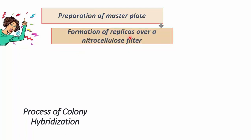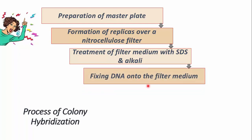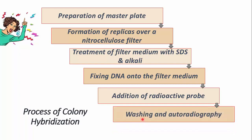Here is the main summary of colony hybridization: first is preparation of master plate, then formation of replicas over a nitrocellulose filter membrane, then treatment of filter medium with SDS and alkali, then fixing DNA onto the filter medium and adding our radioactive labeled probe that will hybridize to the DNA, then washing and autoradiography, and final identification of our desired gene of interest. That's all about colony hybridization.